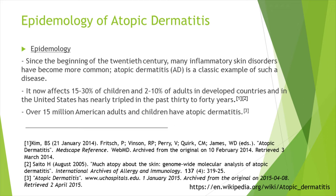How many people are suffering from AD currently? It now affects 15 to 30% of children and 2 to 10% of adults in developed countries. In the United States, prevalence has nearly tripled in the past 30 to 40 years, with over 15 million American adults and children having AD.